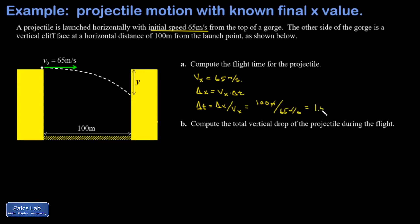Part b is where we really answer the question we were interested in. We want to find the total vertical drop that happens as the projectile crosses this gorge. We want to write down the kinematics equation that describes the y coordinate of the motion: y equals y naught plus v naught y t plus one half a y t squared, where a y is the vertical acceleration. Of course that vertical acceleration is going to be 9.8 meters per second squared pointed downward, so it gets a minus sign.